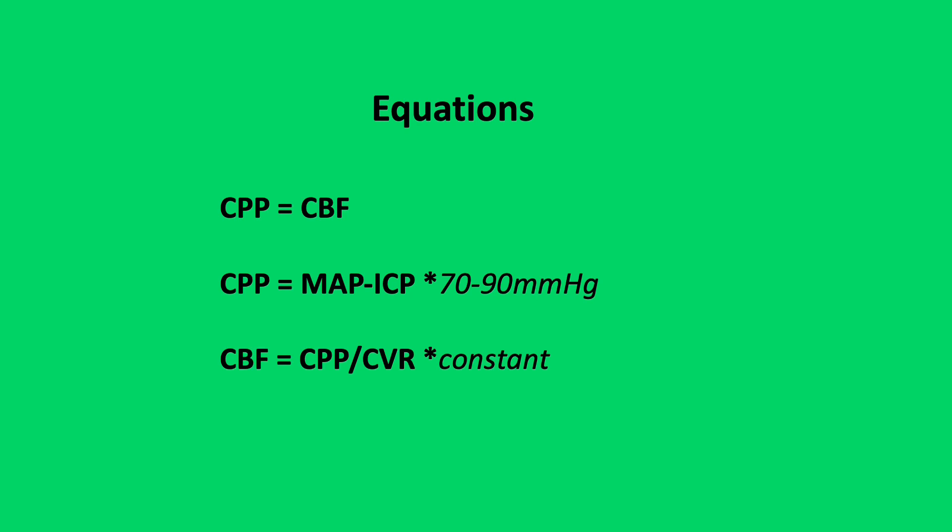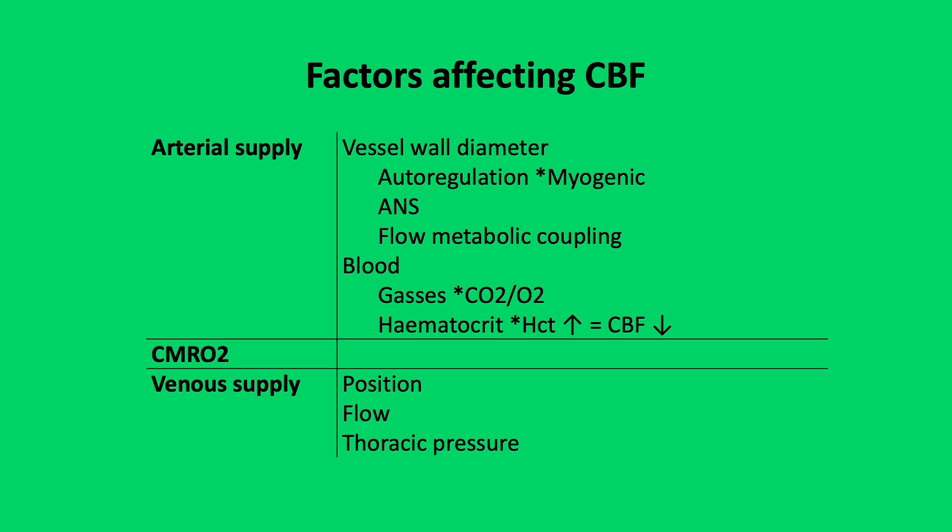Cerebral blood flow is constant over a set range of pressures due to changes in vessel calibre. A range of different factors can affect cerebral blood flow, split into arterial supply, CMRO2, and venous supply. Within the arterial supply, this is affected by vessel wall diameter and the composition of the blood. Autoregulation is thought to be due to myogenic mechanisms: as MAP increases, transmural pressure tension increases, resulting in depolarisation of vascular smooth muscle and constriction of pre-capillary resistance vessels. Flow-metabolic coupling: as cerebral flow is variable across the brain due to differences in neuronal activity, increased neuronal activity leads to increased chemical mediators — CO2, adenosine and phospholipids — which results in an increase in cerebral blood flow.